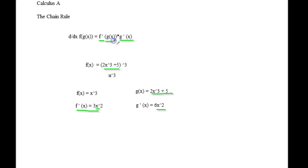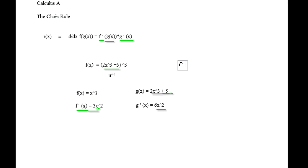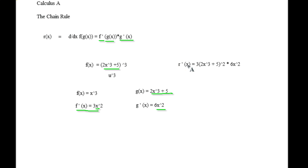That part is going to go on the outside, and this part is going to replace the inside. So when I rewrite the whole thing — let's say the whole thing was r of x — r prime of x is equal to 3 times (2x cubed plus 5) raised to the second power, times 6x squared. And you can combine the terms outside and work with it that way. That's pretty simple. That's how the chain rule works with simple ones.